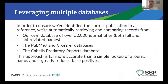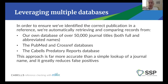In order to ensure that we're accurately identifying journal titles, we're leveraging multiple databases. We have our own database that we've been curating for 20 years — over 50,000 journal titles, both full titles and abbreviated titles. We are also using the PubMed and Crossref databases to refine our results, as well as the Cabell's predatory reports database. This approach has proven to be far more accurate than a simple lookup of a journal name, and it greatly reduces false positives, which we want to avoid.